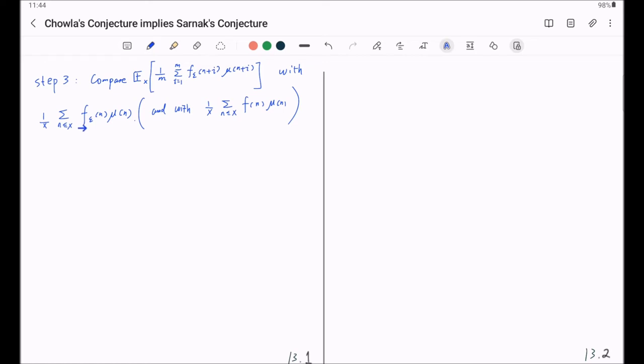It's not hard to see those two terms are very close to each other. This epsilon differs from f_n only by a magnitude of epsilon. So let's see why this expectation is close to this average.